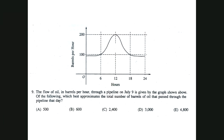How about this one? This is another AP type question. It says the flow of oil in barrels per hour through a pipeline on July 9th is given by the graph shown above. Which best approximates the total number of barrels of oil that passes through the pipeline that day? Letter D, 3,000. If I was looking at this problem, it's like 100 barrels of oil in six hours. So each one of these rectangles is about 600 barrels of oil. I've got 600, 600, 600, and another 600 - five times 600, which is 3,000. That is the correct answer.